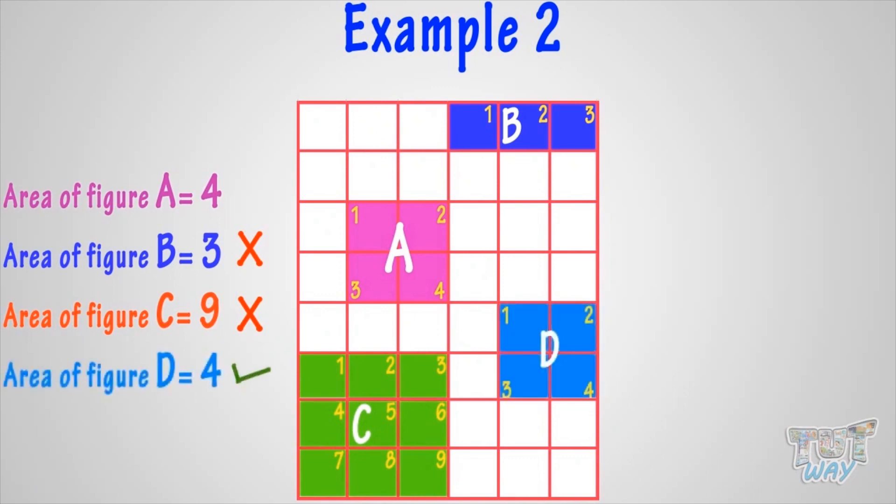It means area of A is equal to the area of figure D, as both enclose the same number of 4 squares. Good!